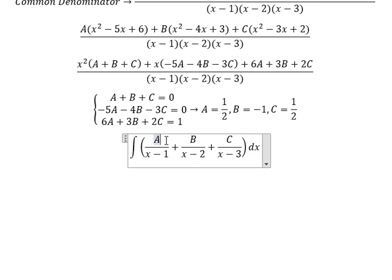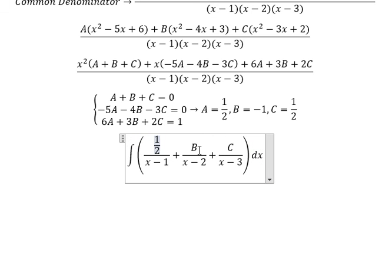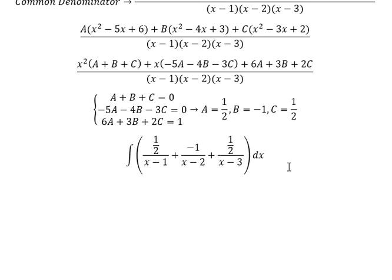So A equals one-half, B equals negative one, C equals one-half. And now we have the final answer. The integration of this one, we have ln of the absolute value of x minus one. Similar for the next one.